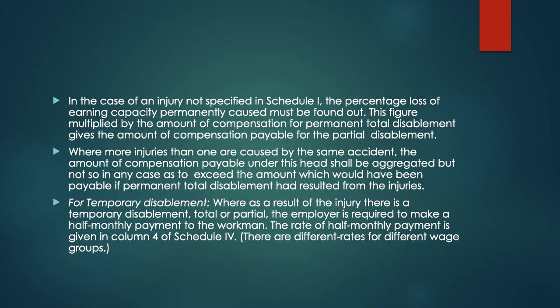In case of an injury not specified in Schedule 1, the percentage loss of earning capacity permanently caused must be found out, and this figure multiplied by the amount of compensation for permanent total disablement gives the amount payable for partial disablement. Where more than one injury is caused by the same accident, the amounts of compensation shall be aggregated, but shall not in any case exceed the amount which would have been payable if permanent total disablement had resulted.